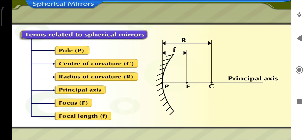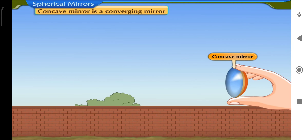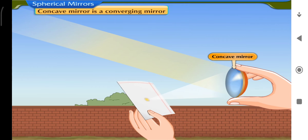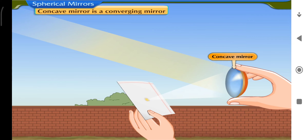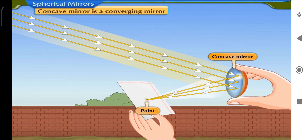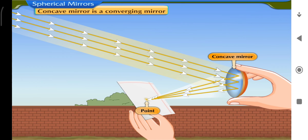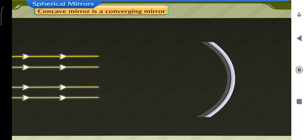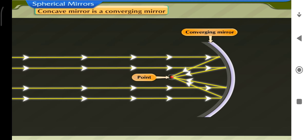Having learnt about the terms related to spherical mirrors, let us now understand the concept of convergence and divergence of light by concave and convex mirrors. A concave mirror is a converging mirror. If we hold a concave mirror facing the sun and focus the reflected rays on a piece of paper, moving it back and forth until a bright sharp spot of light is seen, this sharp spot is the image of the sun. The distance between the spot and the mirror is the focal length. The rays converge at this point; when concentrated long enough, they can burn the paper. When light from a source is to be focused on a small spot, a converging mirror is used.